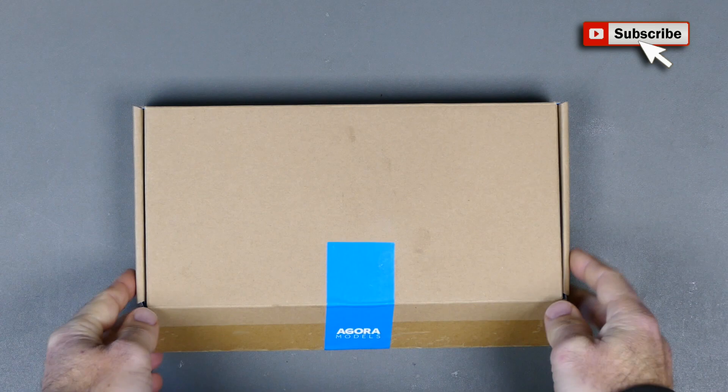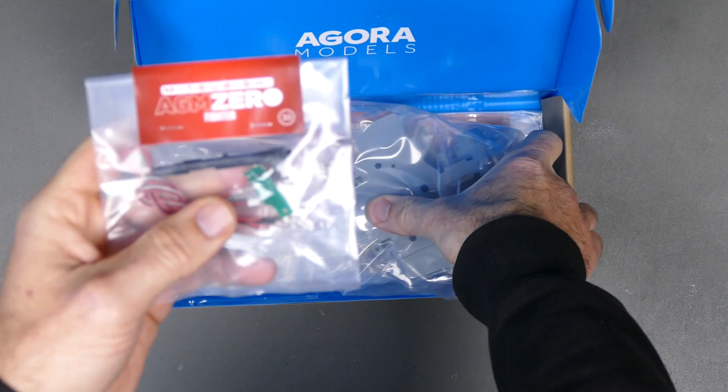What's up everyone? Steve again from RC Tanks and Trucks 24-7 here with Pack 4 for the Mitsubishi Zero from Agora Models. So let's quickly have a look what we get.